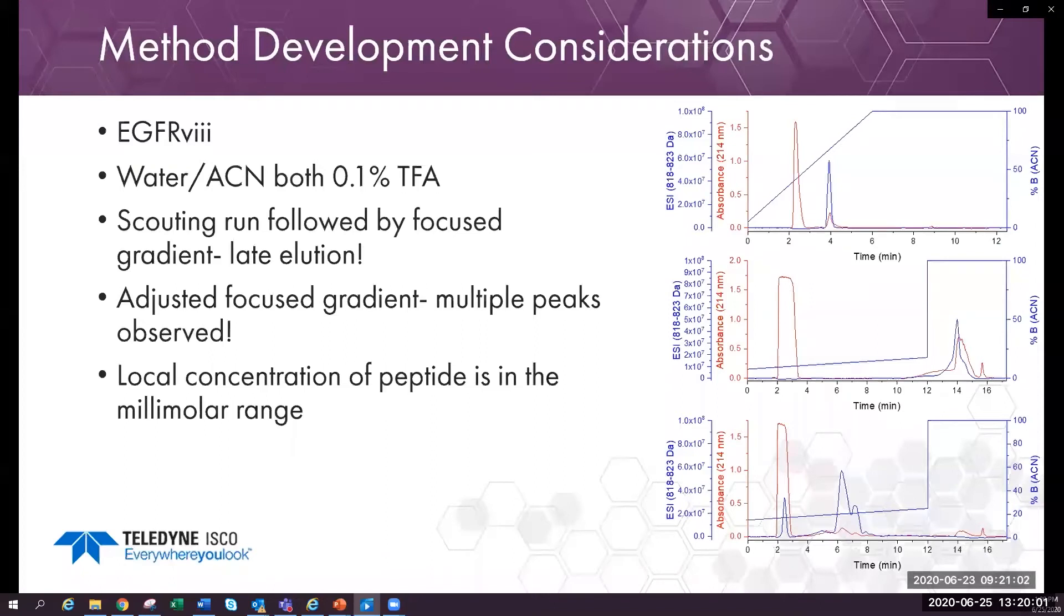Odd peak shapes of ionizable compounds suggest pH issues. The mass spectrometer trace suggests that the same compound is in multiple peaks. This suggests that the compound has multiple stable ionized states under these conditions, each with its own polarity and its own retention time. This is because TFA is not a buffer in preparative HPLC.